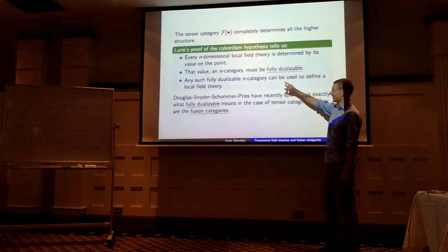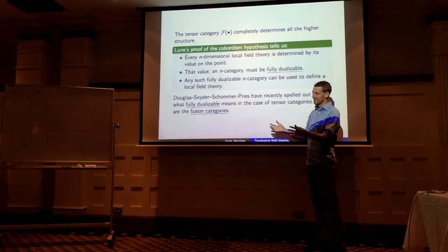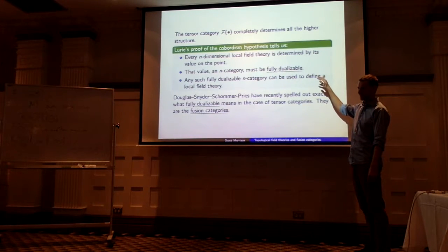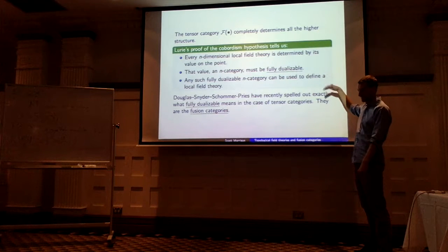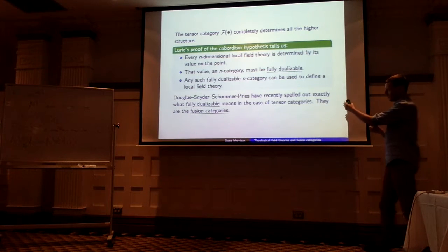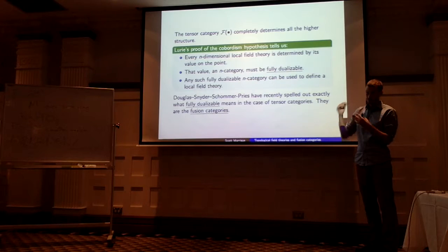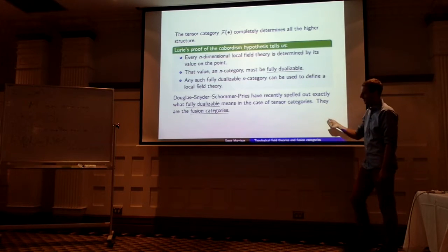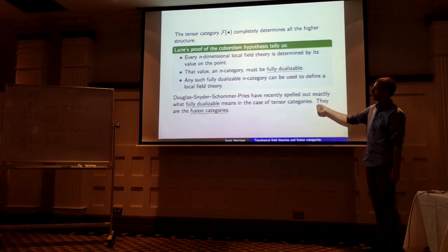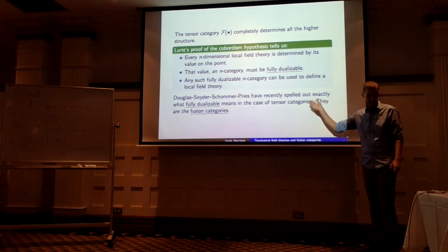Fully dualizable is actually a pun — the acronym is FD, the same as finite-dimensional. It's meant to be a generalization of the notion of finite dimension: if you do this in the n=0 case, fully dualizable ends up actually meaning a finite-dimensional vector space. Douglas, Schommer-Pries, and Snyder have recently told us what fully dualizable means in the case n=2, and their fully dualizable tensor categories are exactly the fusion categories.